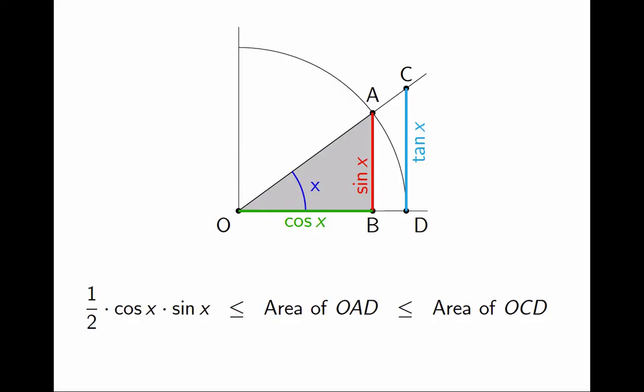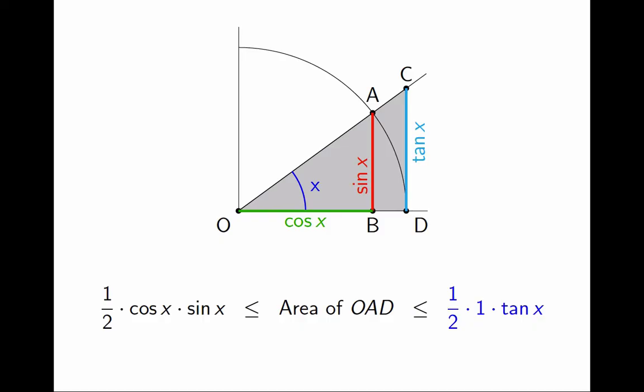Next, let's look at the big triangle OCD. Again, the area is 1/2 of base times height. The base is 1 because the radius of the circle was 1, so the area is 1/2 times tan(x).